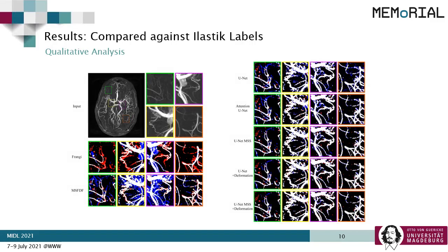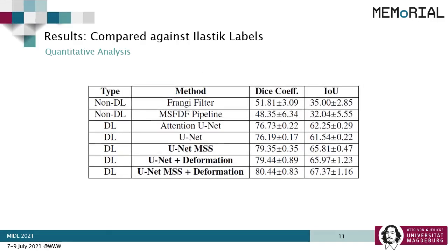Here are some results comparing against elastic labels. White signifies correct segmentation, red denotes under-segmentation, and blue denotes over-segmentation. It can be seen that deep learning techniques perform better than non-deep learning techniques, though the differences among deep learning techniques are visually minute. Looking at the numbers, UNET MSS performed better than UNET, and both UNET and UNET MSS performed better with deformation-aware learning. Our proposed method DS6, which is UNET MSS with deformation, performed the best among all experimented methods.